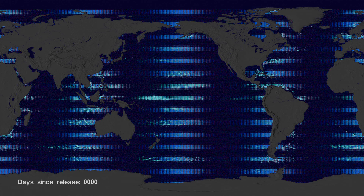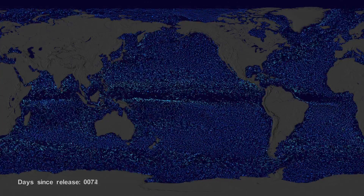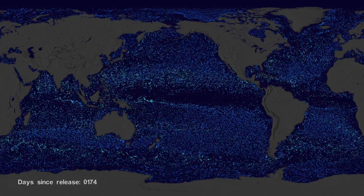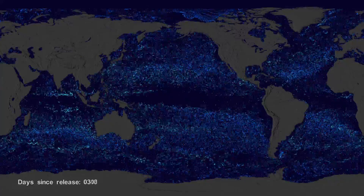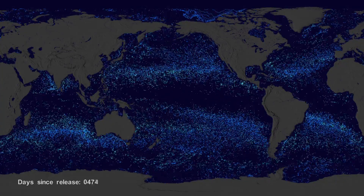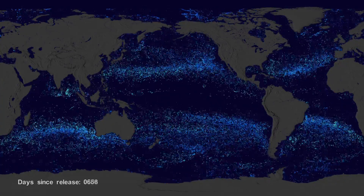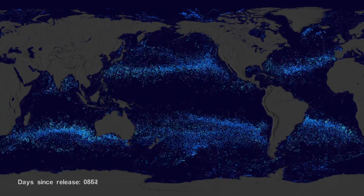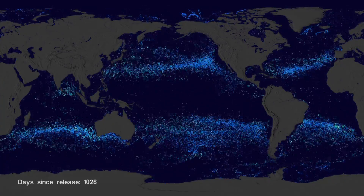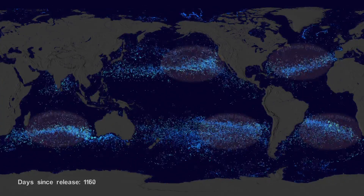We can also see this in a computational model of ocean currents called ECHO2. We release particles evenly around the world and let the modeled currents carry the particles. The particles from the model also migrate to the garbage patches.